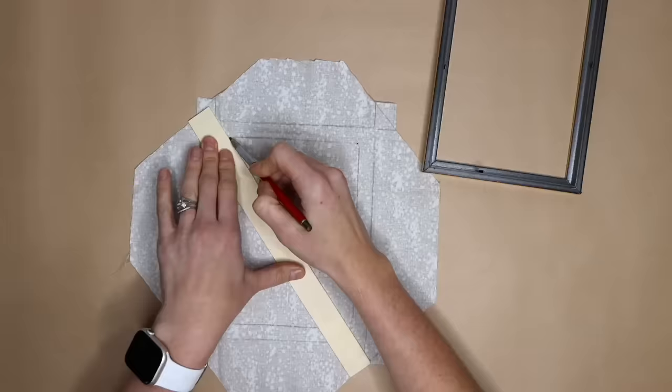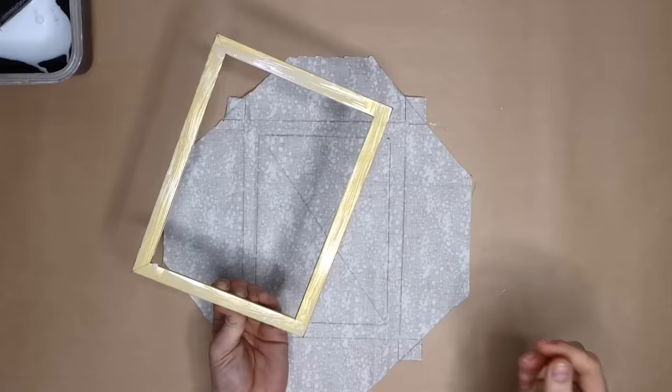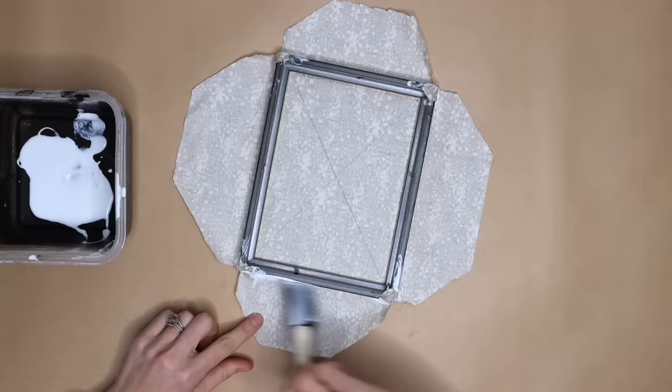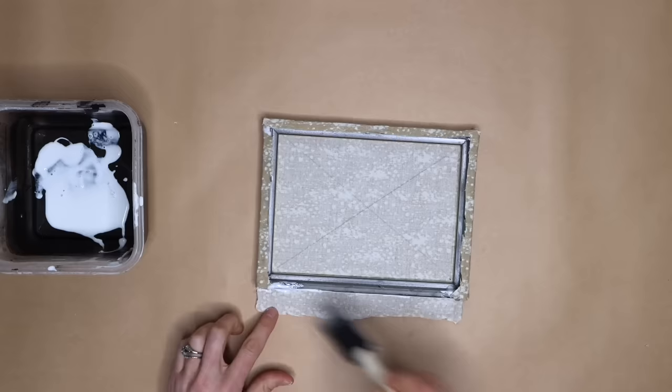Cut a diagonal line on the corner box cut marks and Mod Podge that fabric to the corners of the frames. Fold the fabric over on itself and then Mod Podge the rest of the fabric to wrap it around the exterior of the frame.